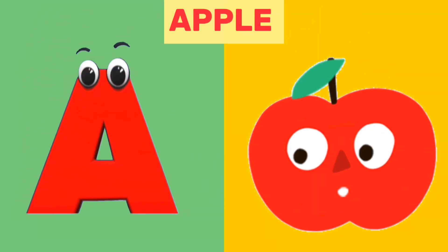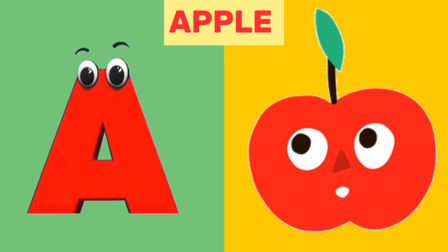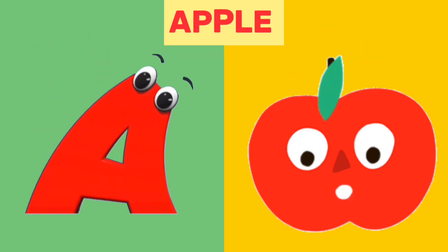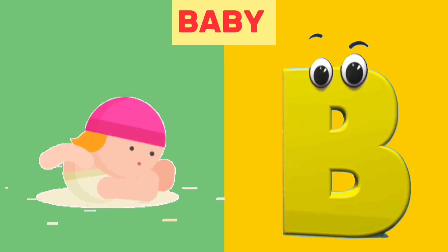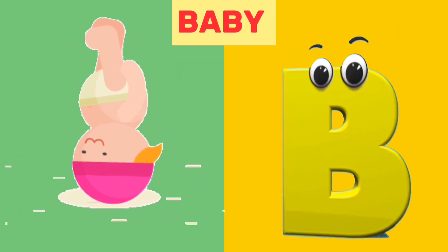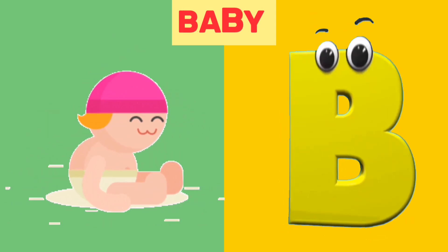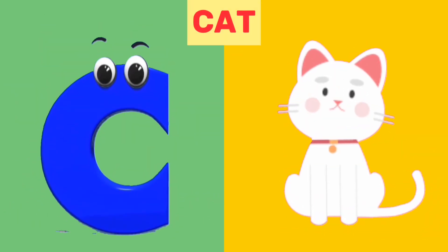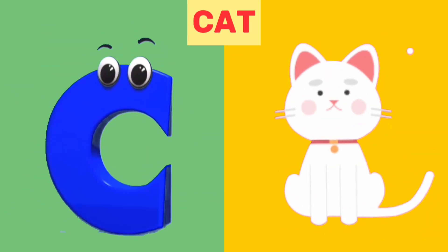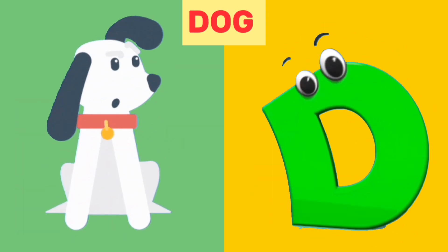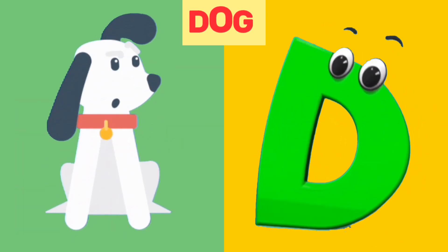A is for Apple. A, A. Apple. B is for Baby. B, B. Baby. C is for Cat. C, C. Cat. D is for Dog. D, D. Dog.